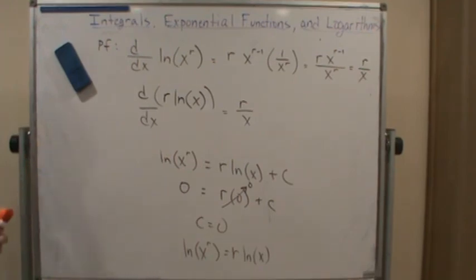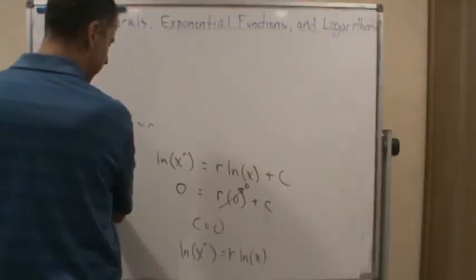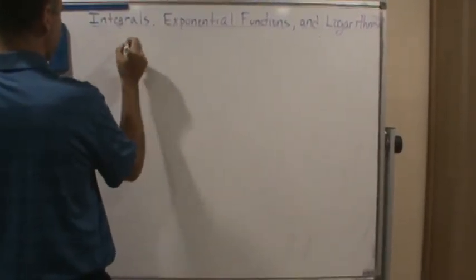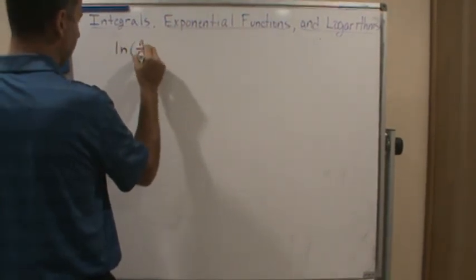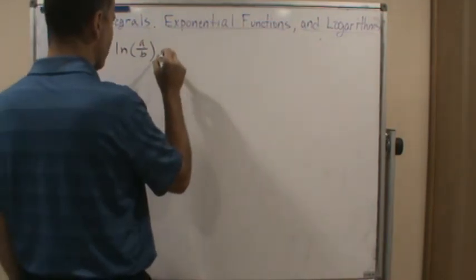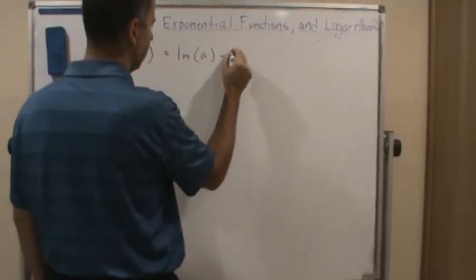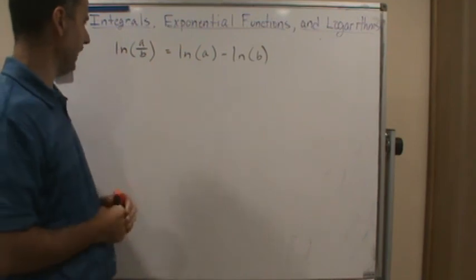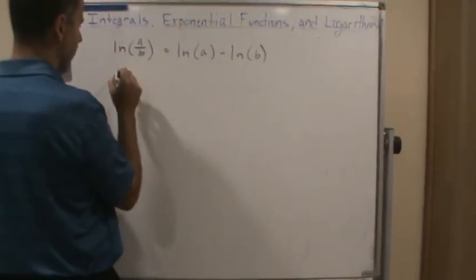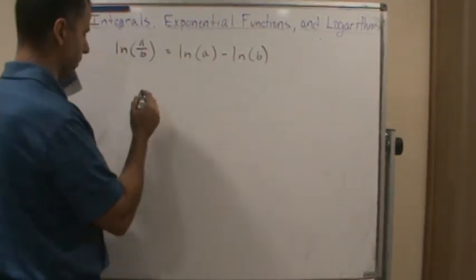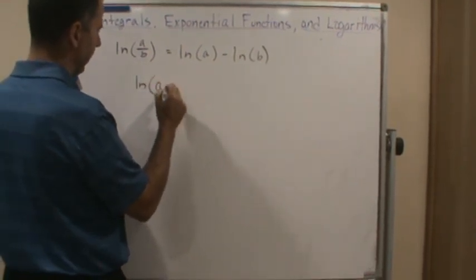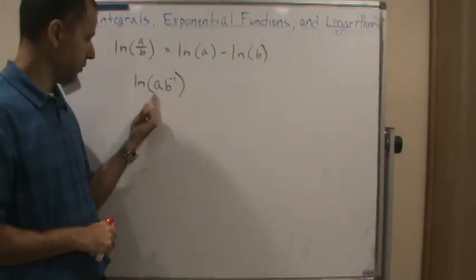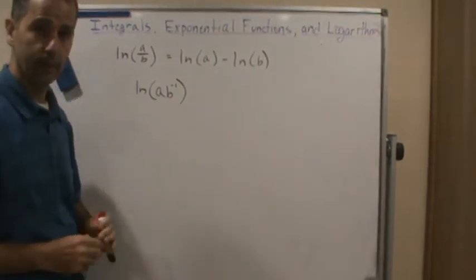The property I skipped — that the natural log of a over b equals the natural log of a minus the natural log of b — follows from the other two proofs. You can write a/b as a times b to the negative one, then use the product and power properties to show it equals ln(a) − ln(b). I'll leave that for you to work out on your own. Have a great day.